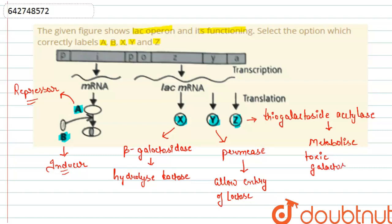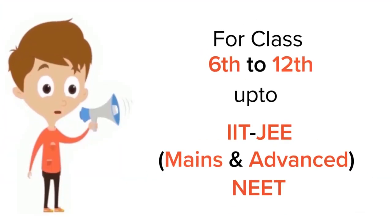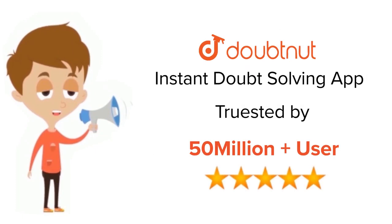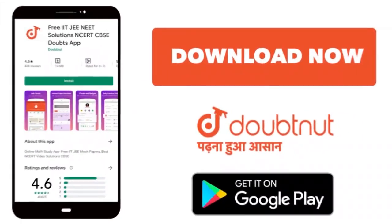So this is all about the A, B, X, Y, and Z. For class 6 to 12, IIT-JEE, and NEET level, trusted by more than 5 crore students, download Doubtnet app today.